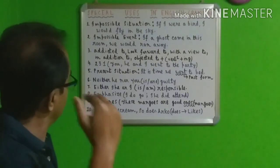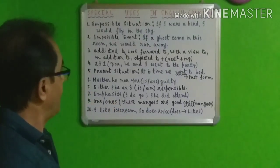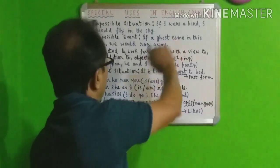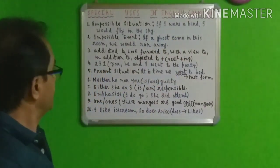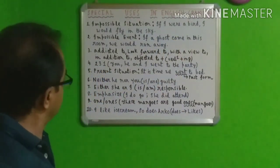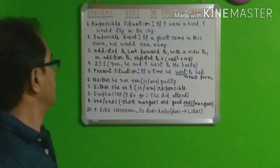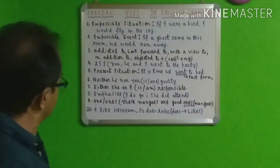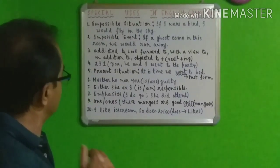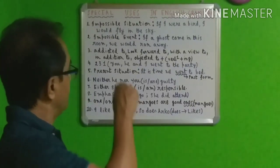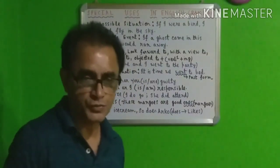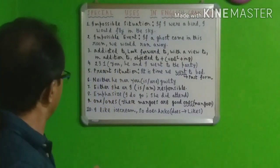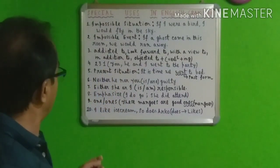This is a present impossible event, but we have to use the past form of the verb — 'came.' 'If a ghost came into this room, we would run away.' This is a present situation, a present impossible event, but the past form of the verb is used. This is a very special use of English grammar.